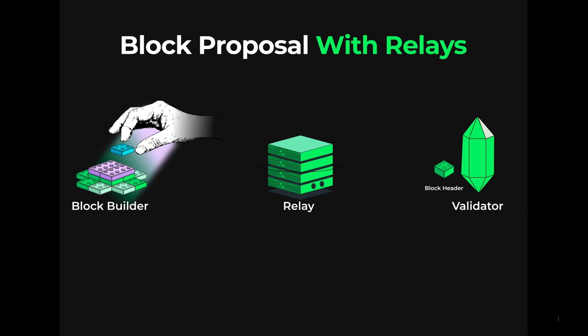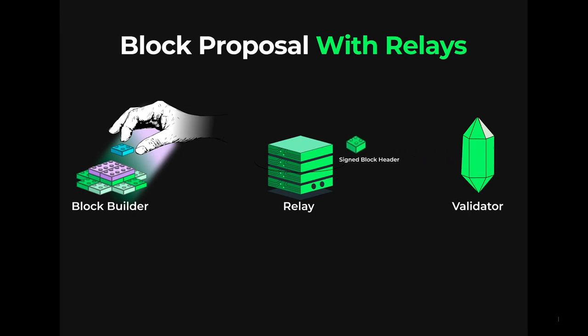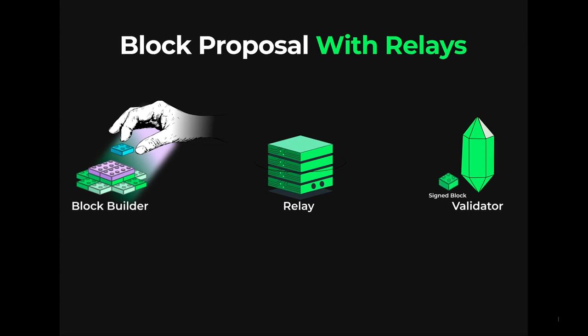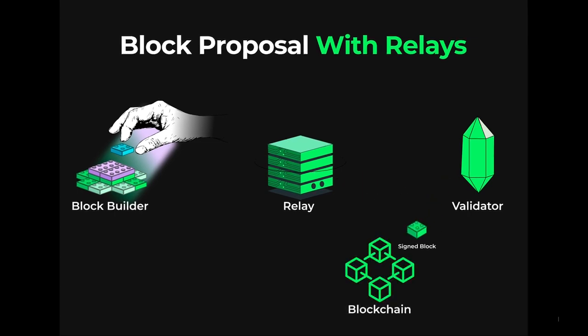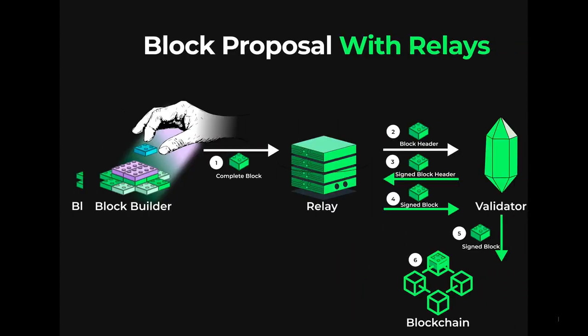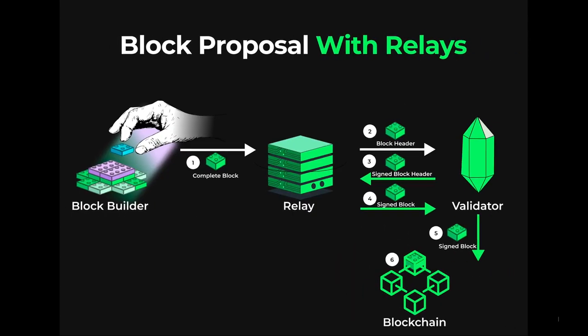This is done so the validator doesn't try to recreate the block themselves and steal the MEV. The validator key is used to sign off on the block so it can be proposed. The signed block header is sent back to the relay, which then releases the full block to the validator. The signed block is then proposed to the Ethereum blockchain.